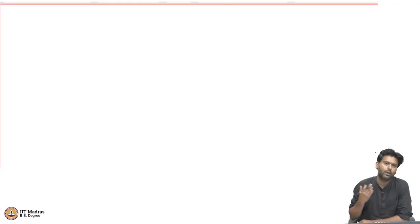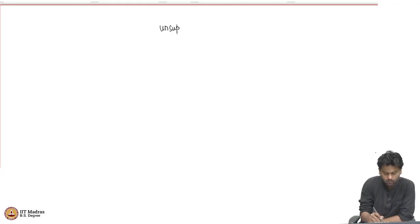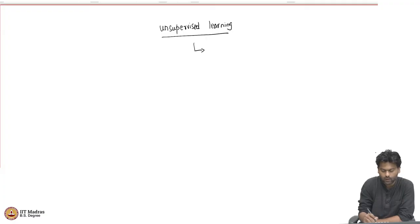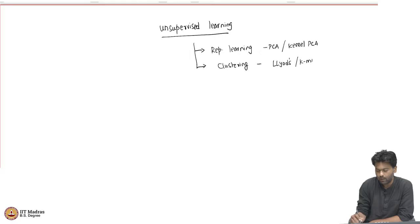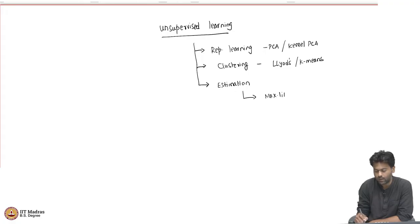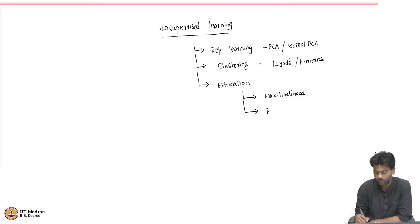Welcome back everybody. We have been looking at unsupervised learning so far in this course. To recap: we looked at representation learning via PCA and kernel PCA, then clustering methods giving us Lloyd's algorithm or k-means, and last time we looked at estimation as a probabilistic approach — covering maximum likelihood and Bayesian modeling, where you start with a prior and convert it into a posterior.